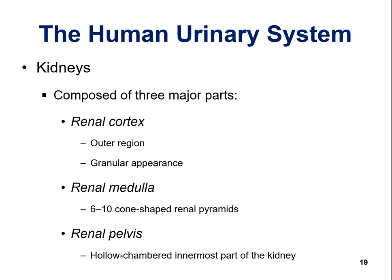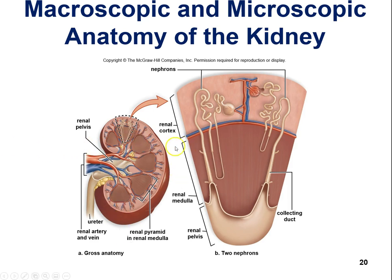You should be able to identify from a diagram: kidneys, ureters going from each kidney to the bladder, and the urethra passing urine to the outside. Looking at a cross-section of the kidney, there are three major parts: the renal cortex (outer region), the renal medulla, and the renal pelvis (innermost part). The nephrons are visible in the cortex, with some tubules extending into the medulla. The renal pelvis leads to the ureter.